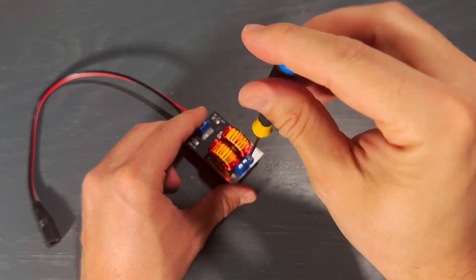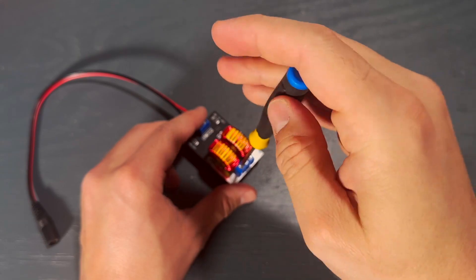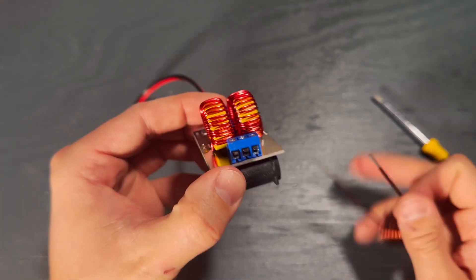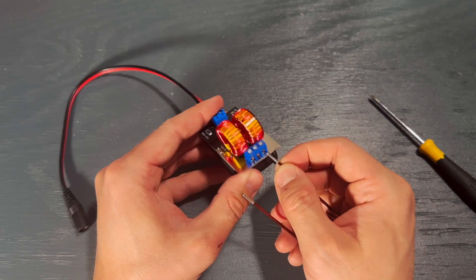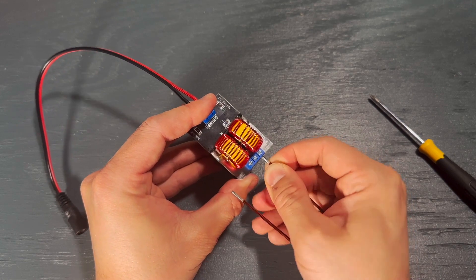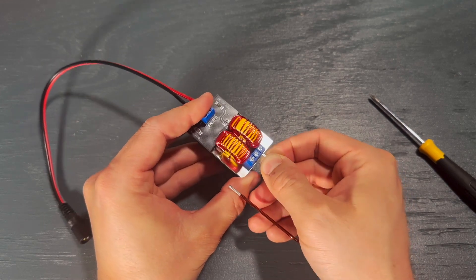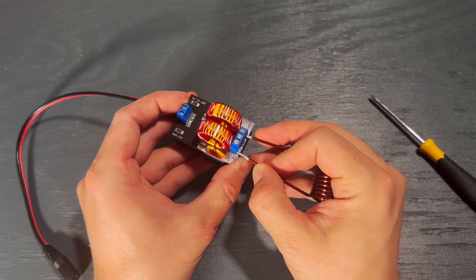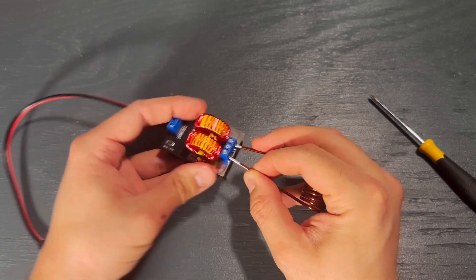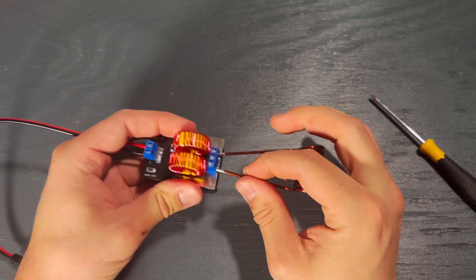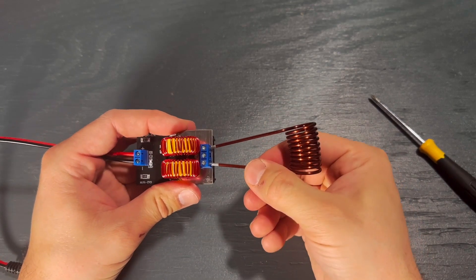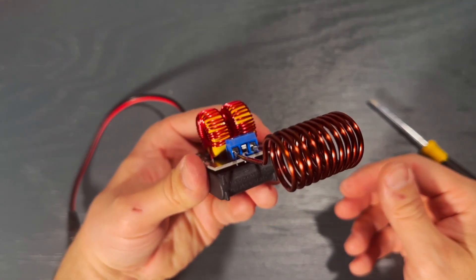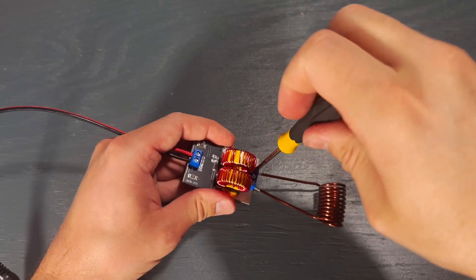Unscrew both outer screws on the coil side of the board. Insert the coil into the outer receivers. There's three receivers here, you're going to use the outer two. The coil is kind of tough to get into these, you got to kind of turn the coil back and forth and push to get it in there. Then tighten the outer screws.